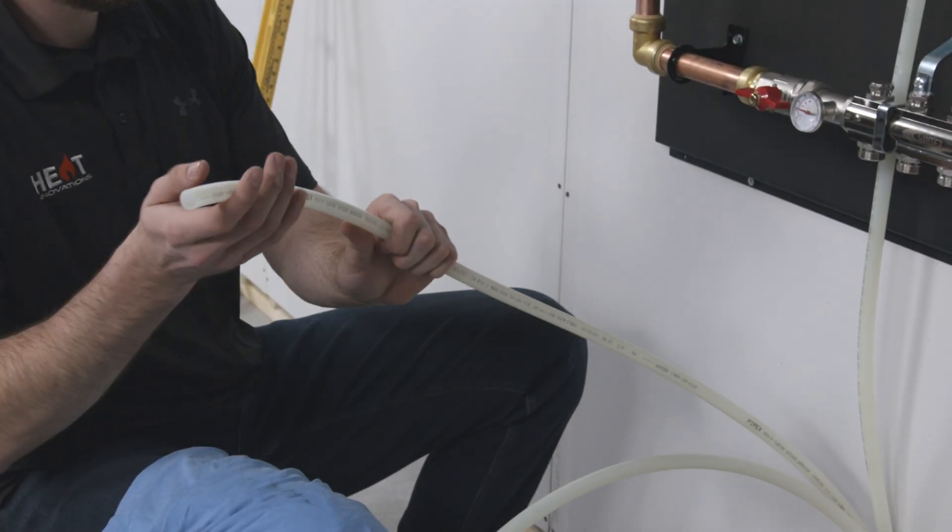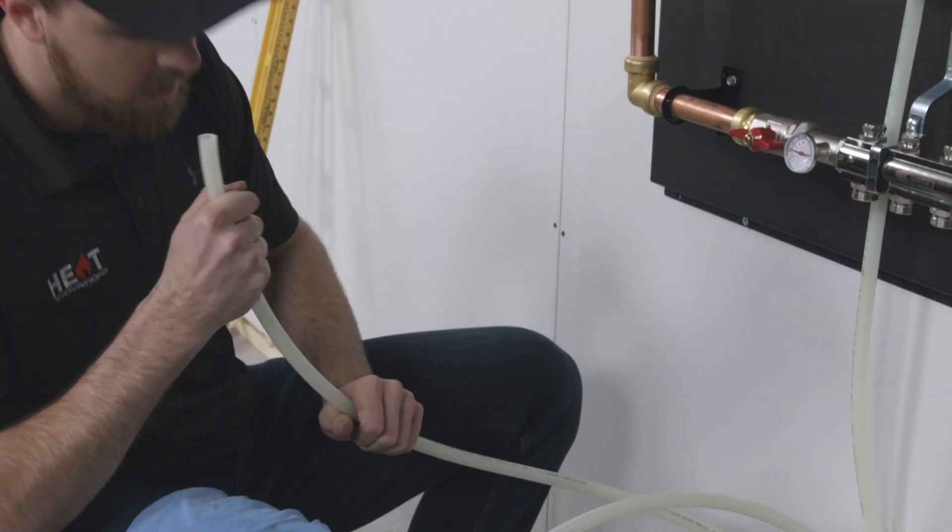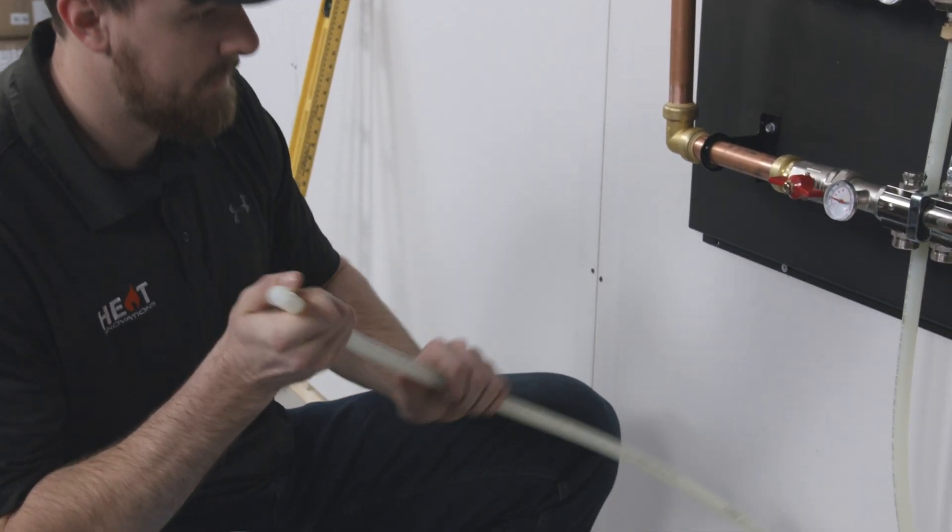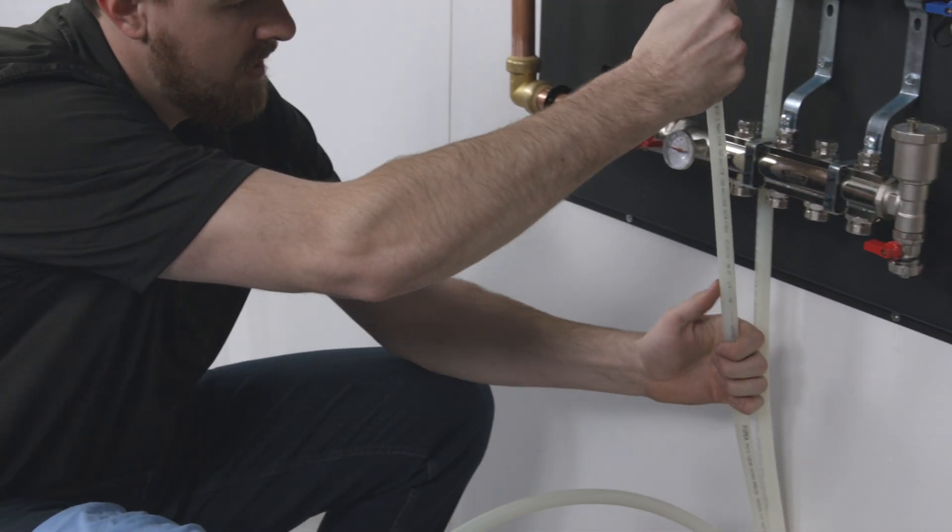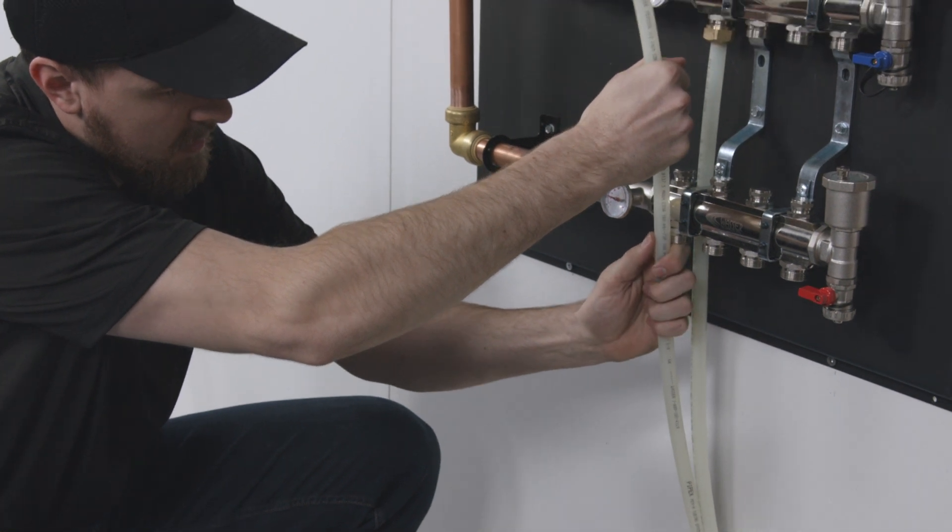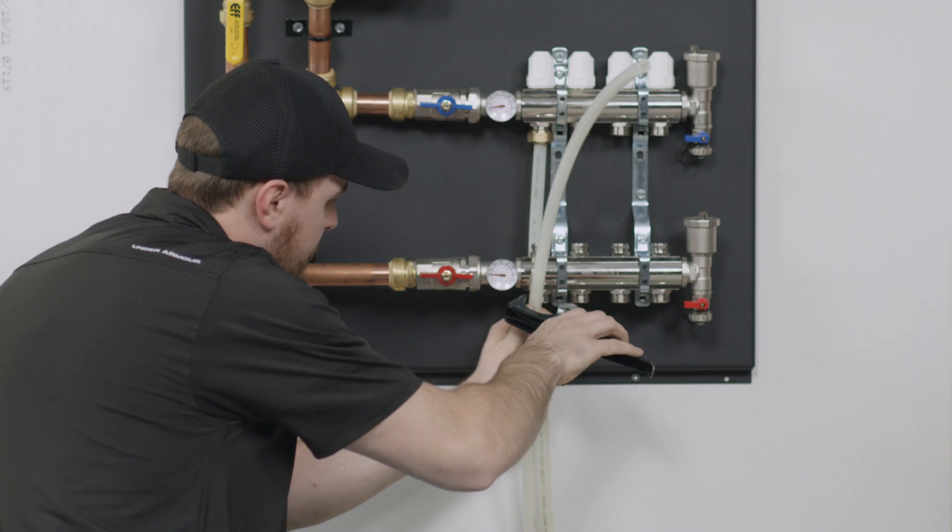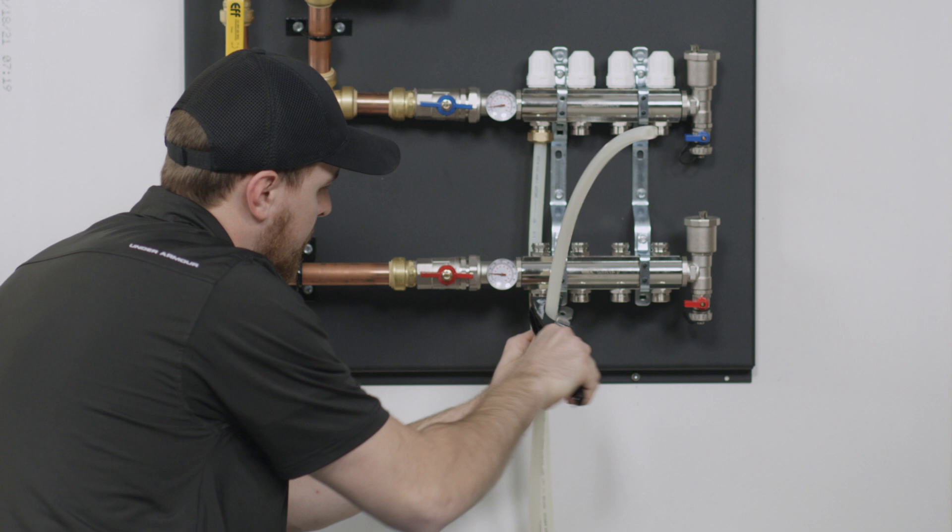Connect the PEX loops in your floor to the manifold. Be sure to identify the supply and return pairs. This can be easily checked by blowing into one end of the pipe and finding its mate. Cut the pipe to length, leaving a bit extra.